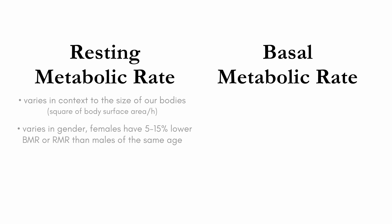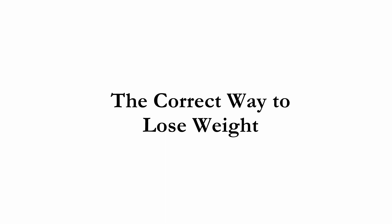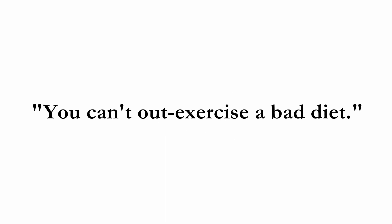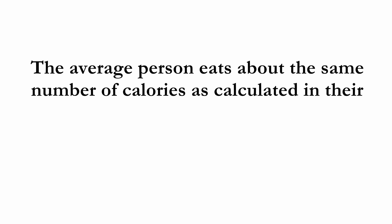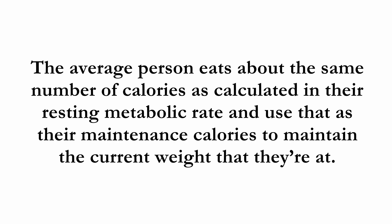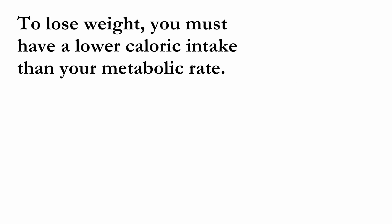Now that I've given you a background on daily energy expenditure and resting and basal metabolic rate, I can give you some cool advice. In this class, after reading the article 'The Exercise Paradox' by Herman Pontzer and taking into consideration the knowledge from this energy module, I'd like to provide some scientific evidence on the correct way to lose weight. You've probably heard the phrase 'you can't out-exercise a bad diet.' As you may know, one pound is equivalent to 3,500 calories. Our bodies burn a certain number of calories through resting metabolic rate, and the average person eats about the same number of calories as calculated in their RMR, using that as their maintenance calories to maintain their current weight — basically consuming the same amount of calories as you burn in a day to put you at a baseline.